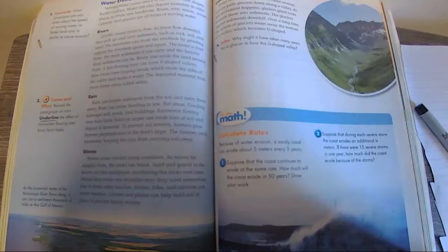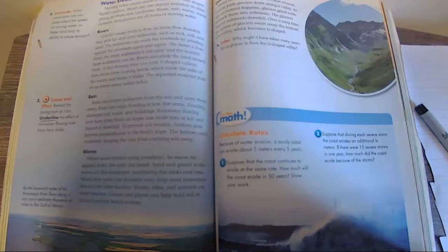Rivers also erode the land around them. A fast-flowing river can form V-shaped valleys. Slow rivers form looping bends which erode the sides of the valley and make it wider. The deposit material from river forms an area called a delta.